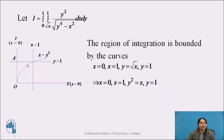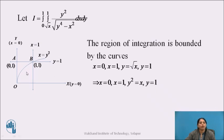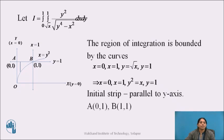The y-axis intersects the line y equal to 1 at point A, and the line intersects the curves as well as x equals to 1 at point B. The coordinates of A are (0, 1) and the coordinates of B are (1, 1), obtained by solving the curve equations. The region of integration lies between x equal to 0 and x equals to 1. Since y is expressed as a function of x, the initial strip is parallel to the y-axis, with its lower end on y² equal to x and its upper end on y equals to 1, so the region OAB is the region of integration.